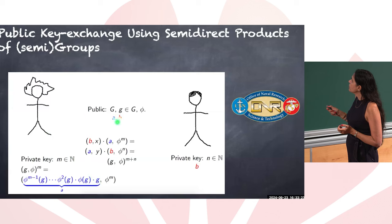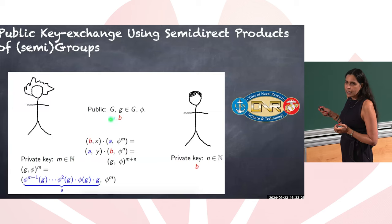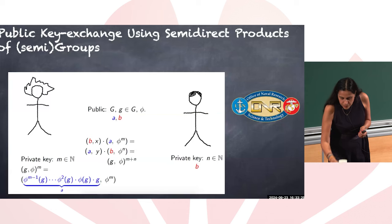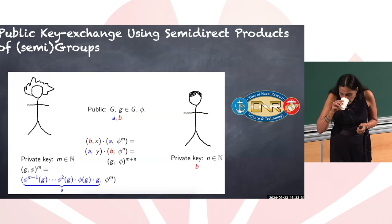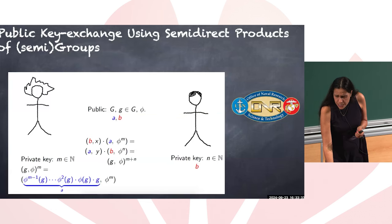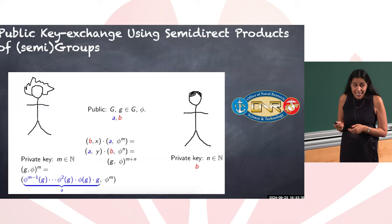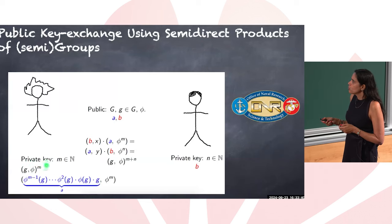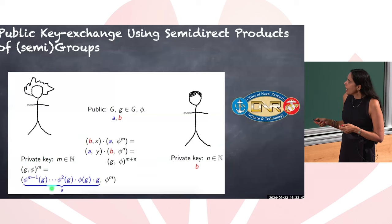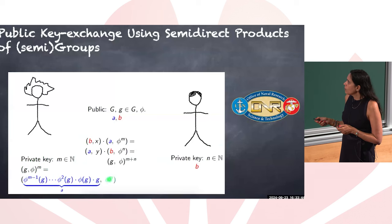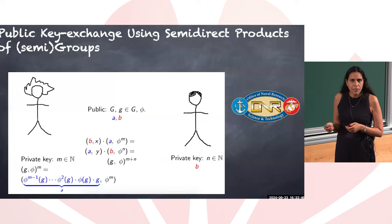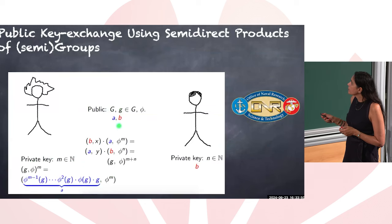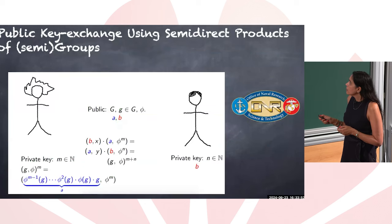Now Alice chooses a private key m, natural number, and inductively computes (g,phi) to power m. The same way that I told you how to multiply in the semi-direct product setting. So it's going to be looking like this blue thing that I called a. Note that m is private. And the second component is phi to power m. Alice doesn't send phi^m because it's going to give me exactly the same problem as discrete log, which is not post-quantum, and it's not going to add anything to the literature. So now a is public. And Bob does similar thing.